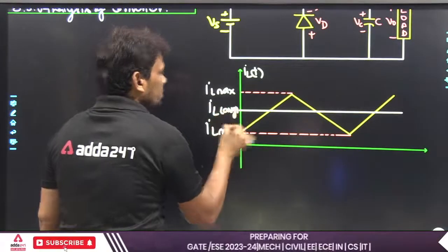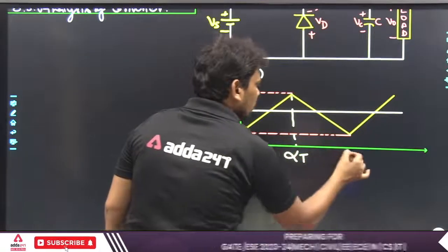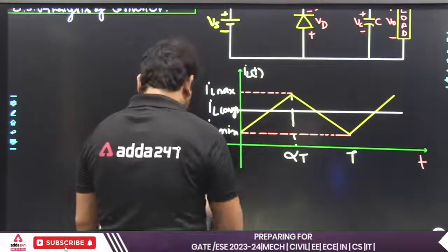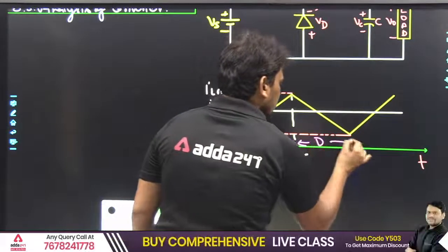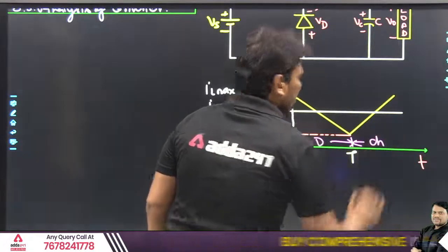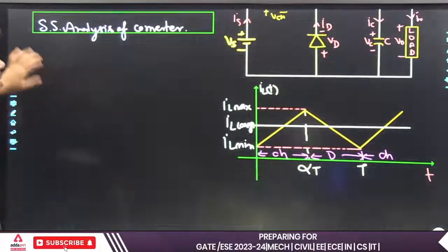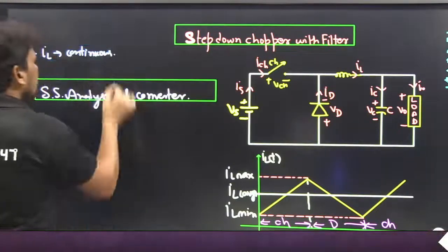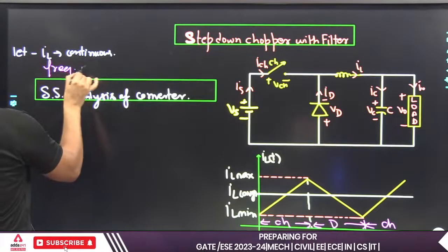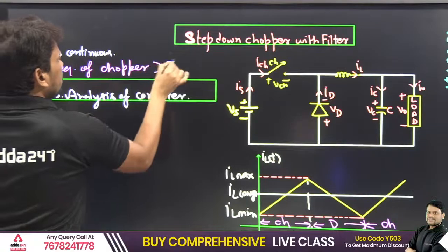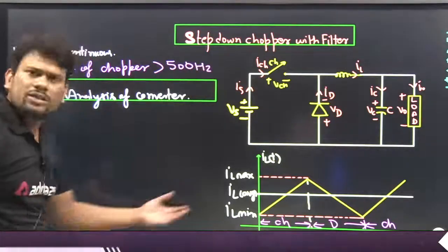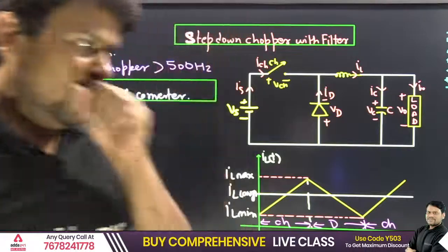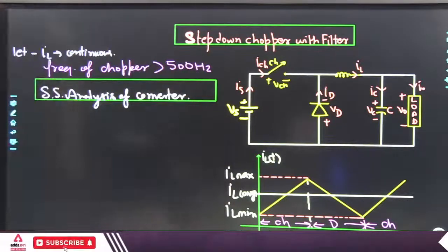IL_average — in this range the chopper is ON, otherwise the diode is ON, and after that the same thing will repeat. So here we write: chopper ON, and somewhere here is diode ON. Now one more point: let IL be continuous, and the frequency of the chopper is more than 500 Hz. Due to this reason we are saying that the current is linear. If the frequency is less than 500 Hz, we do not consider the current to be linear.